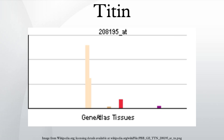It connects the Z-line to the M-line in the sarcomere. The protein contributes to force transmission at the Z-line and resting tension in the I-band region. It limits the range of motion of the sarcomere in tension, thus contributing to the passive stiffness of muscle. Variations in the sequence of Titin between different types of muscle has been correlated with differences in the mechanical properties of these muscles. With its length of 27,000 to 33,000 amino acids, Titin is the largest known protein.